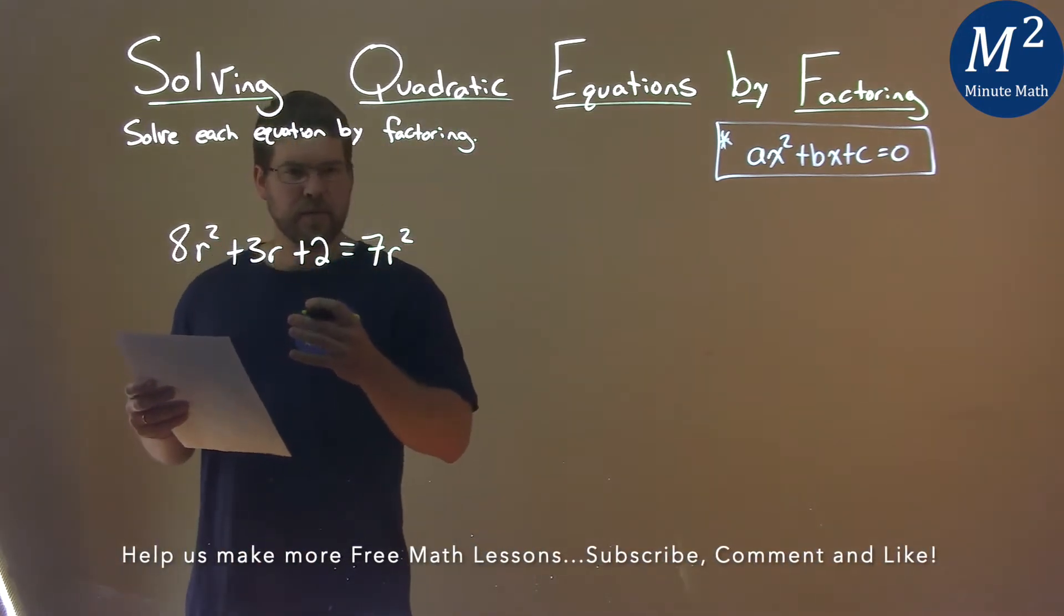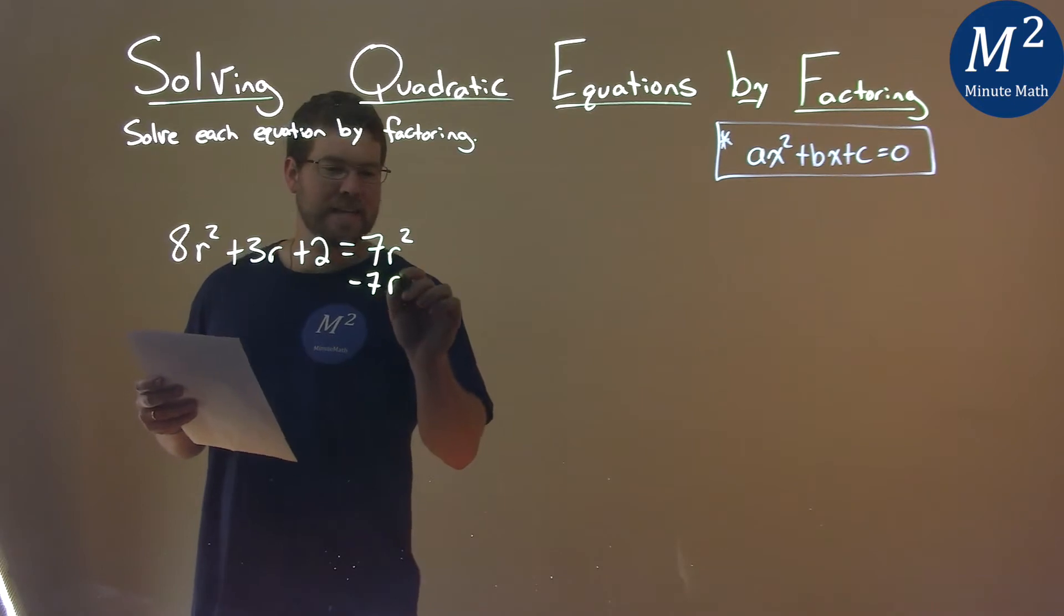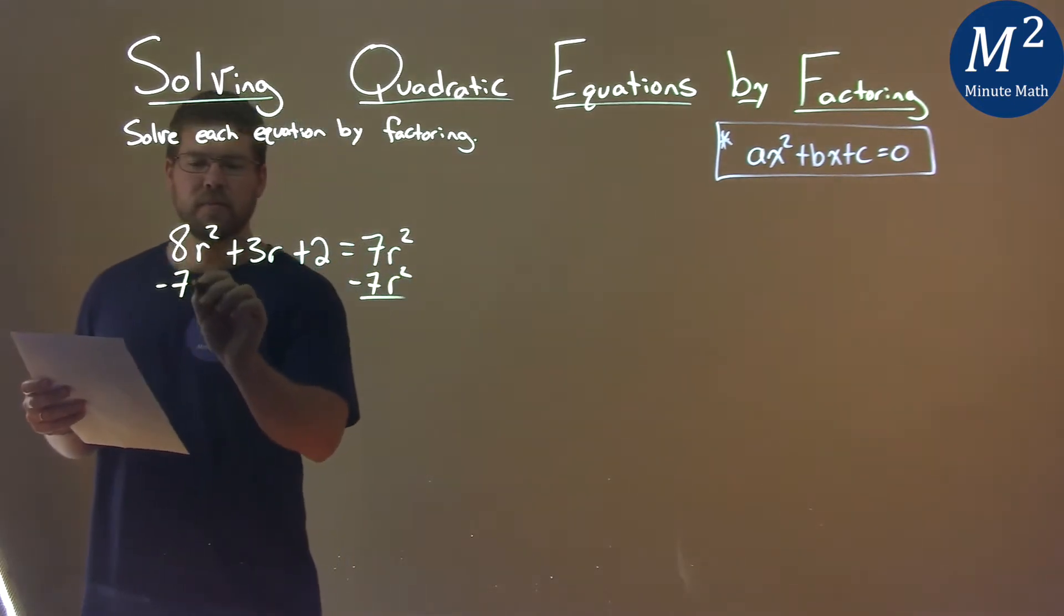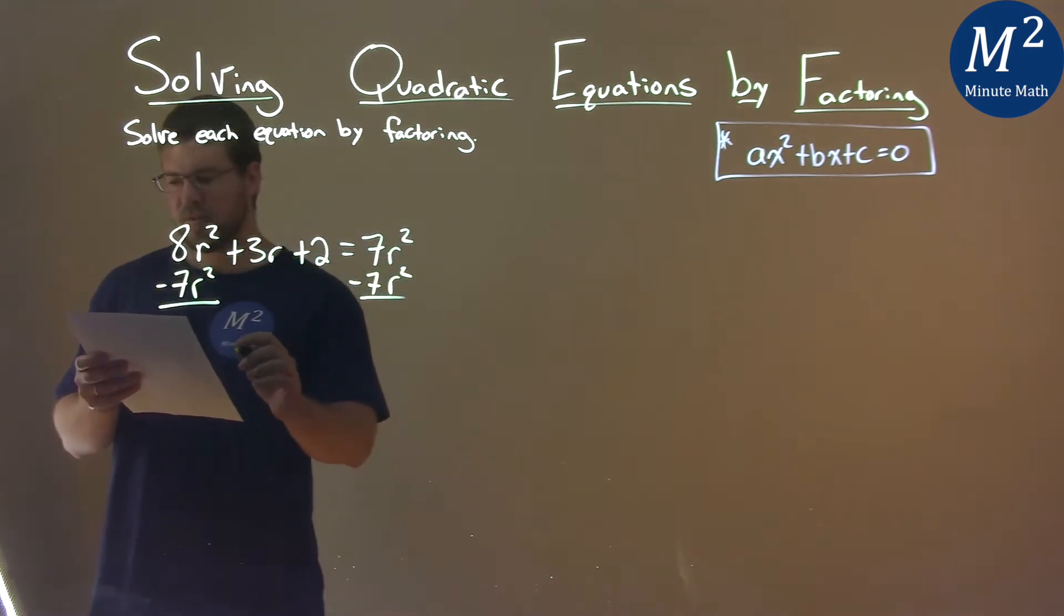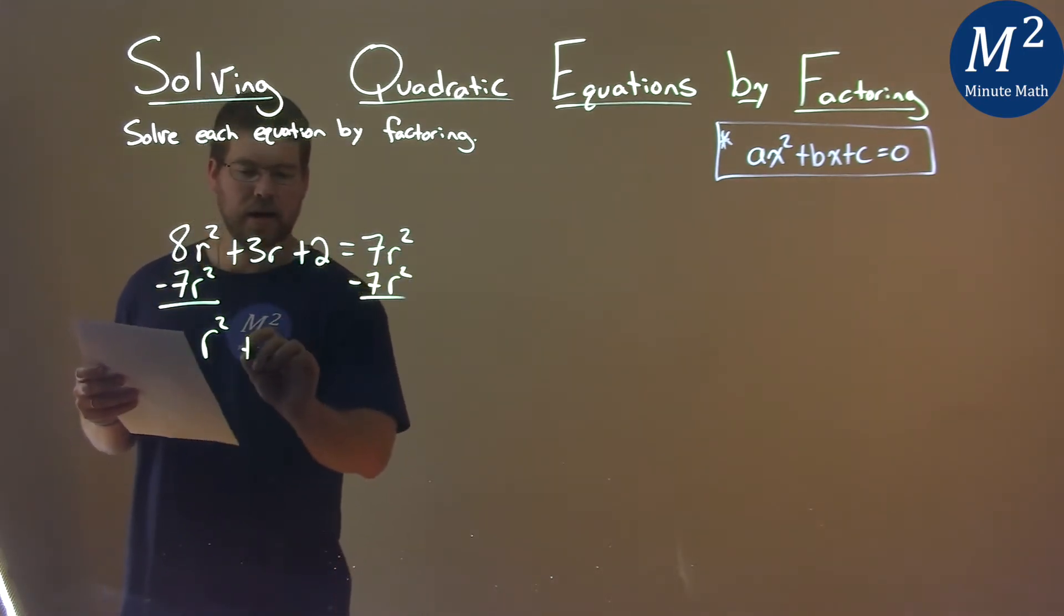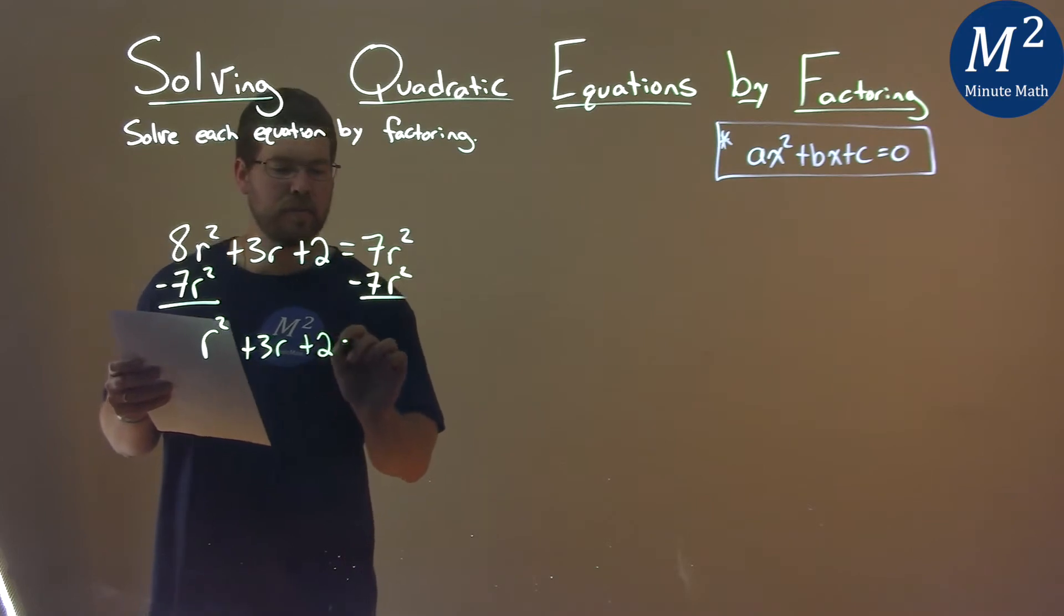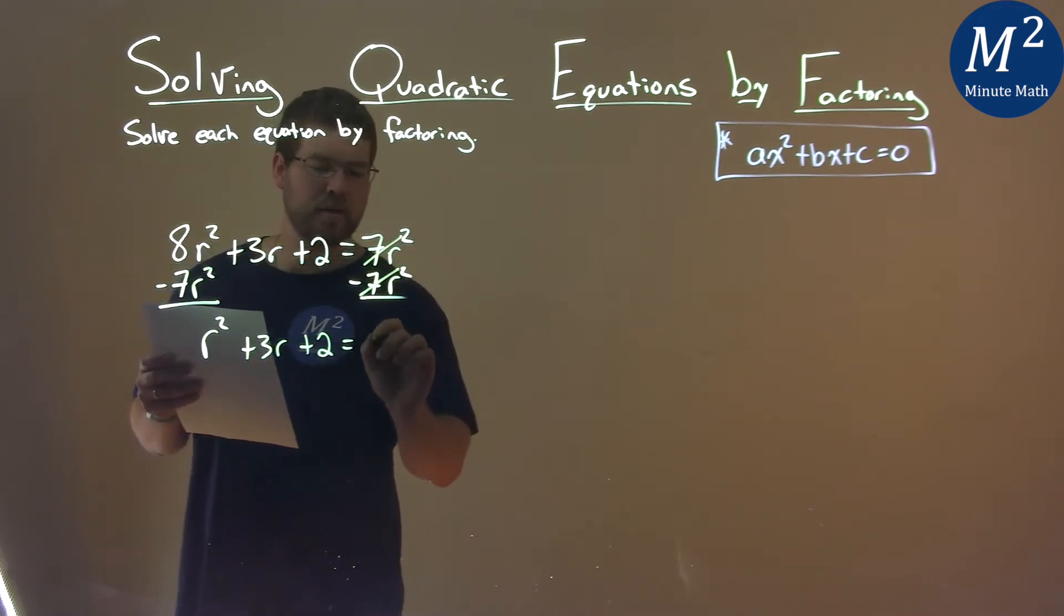Let's get our like terms together. So I'm going to subtract 7r squared to both sides, and 8r squared minus 7r squared is just 1r squared. Bring down the 3r, bring down the 2, and then the right-hand side is equal to 0.